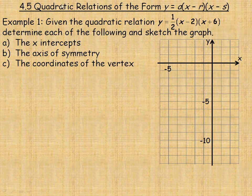This lesson will show how to work with quadratic relations that are in the factored or intercept form. It looks like y equals a, some constant, times x minus r, where r is one of the x-intercepts, times x minus s, where s is the other intercept.